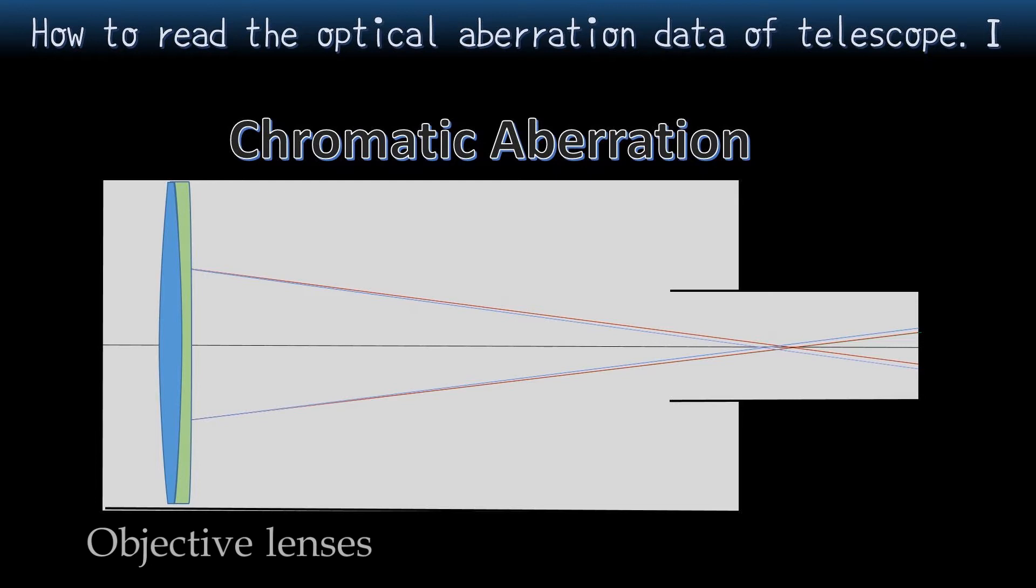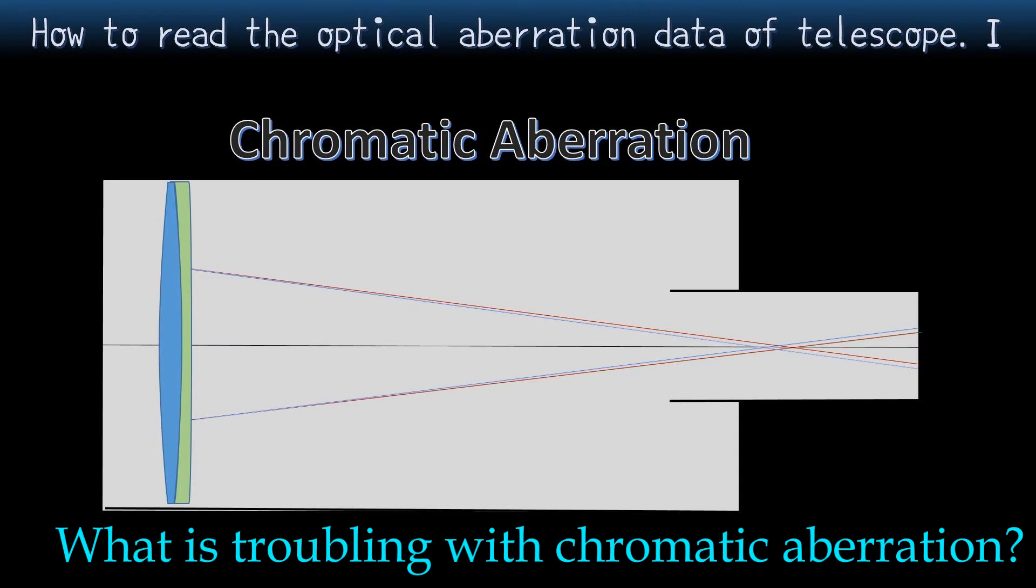So SD-103S is also made of two different lenses. In particular, Ohara FPL-53 is an excellent material that removes aberrations for this telescope. But front lens or back one, I don't know which lens is made by this material. By the way, what is troubling with chromatic aberration? Also, there are two types: axial aberration and transverse aberration.